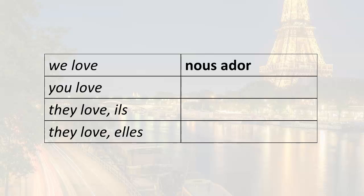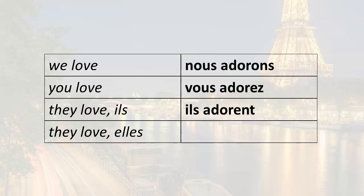So let's review our plural forms first. We love is adorons. You love — vous adorez. They love — ils adorent. They love — elles adorent.